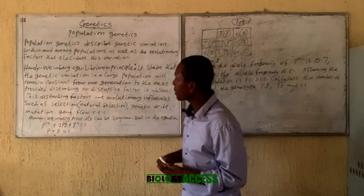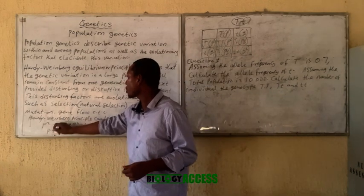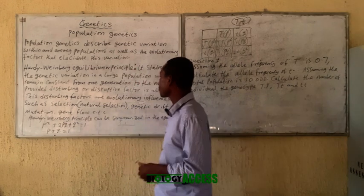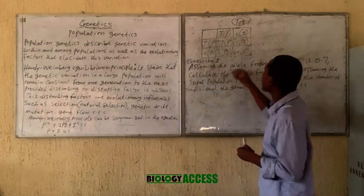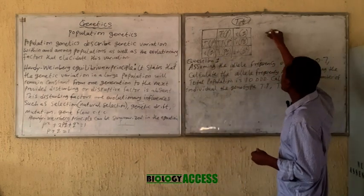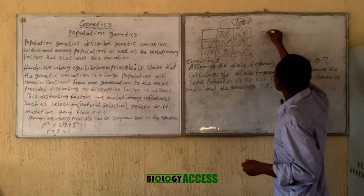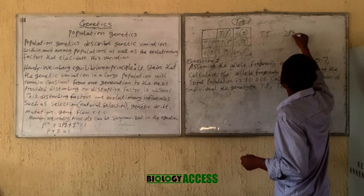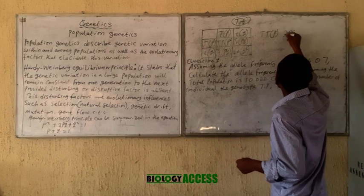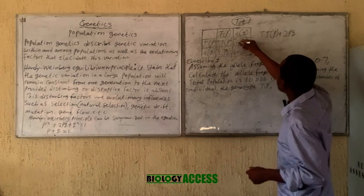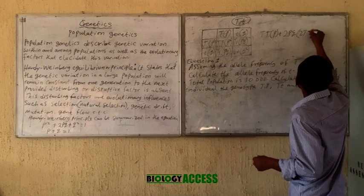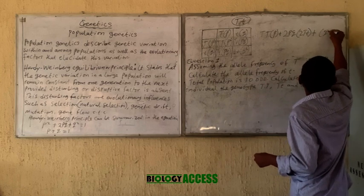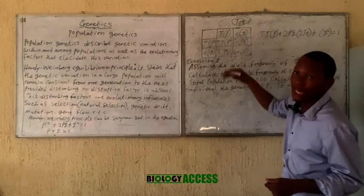The Hardy-Weinberg equation is: p² + 2pq + q² = 1. If we work out this cross, we get p² (which is TT), 2pq (which is Tt, appearing twice), and q² (which is tt). All together these equal one, or 100%.